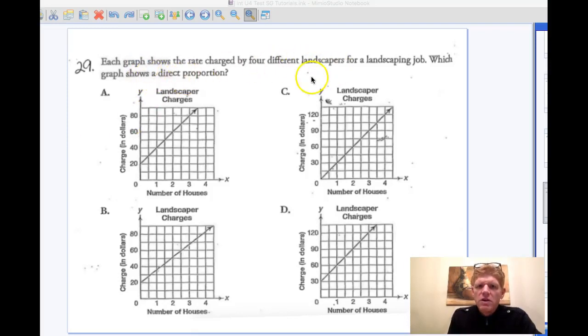Number 29 asks us to find which one of these shows a direct proportion. So a direct proportion is the same thing as direct variation.